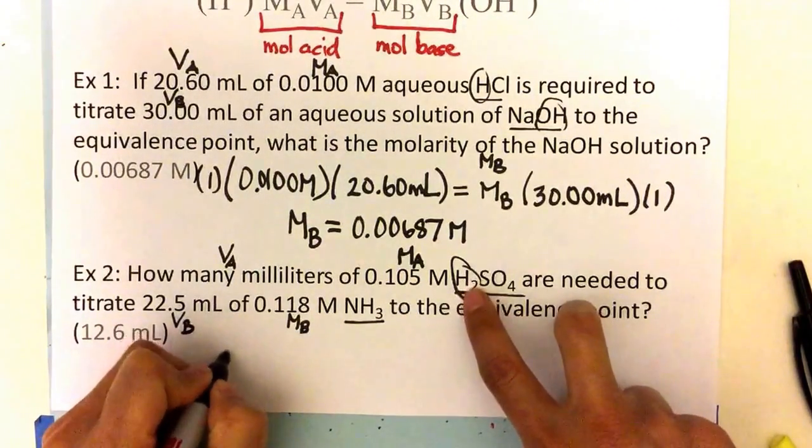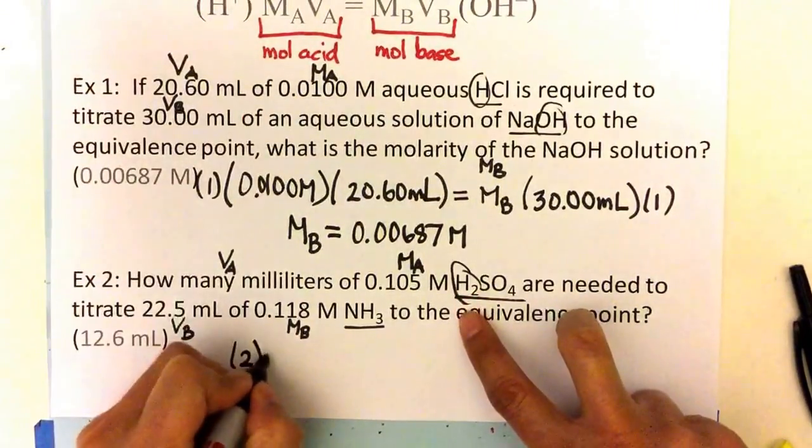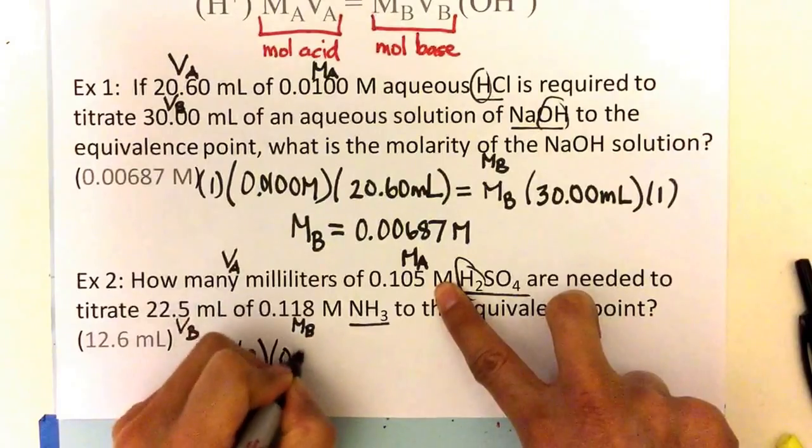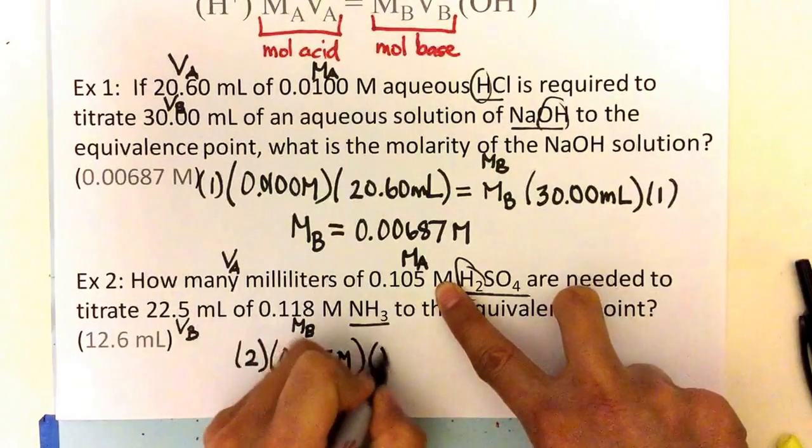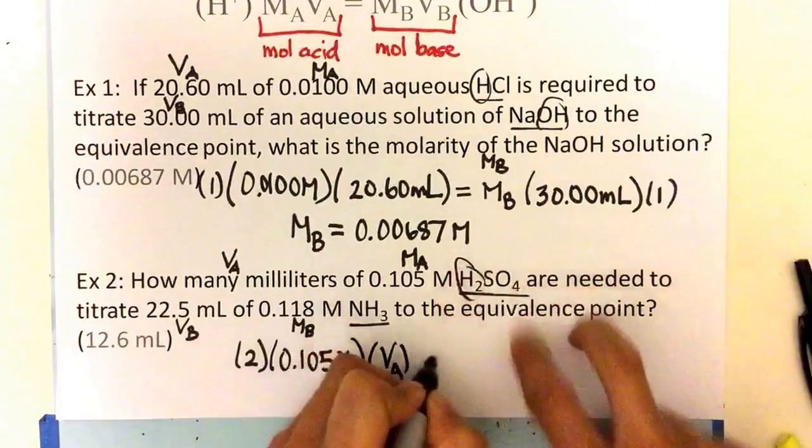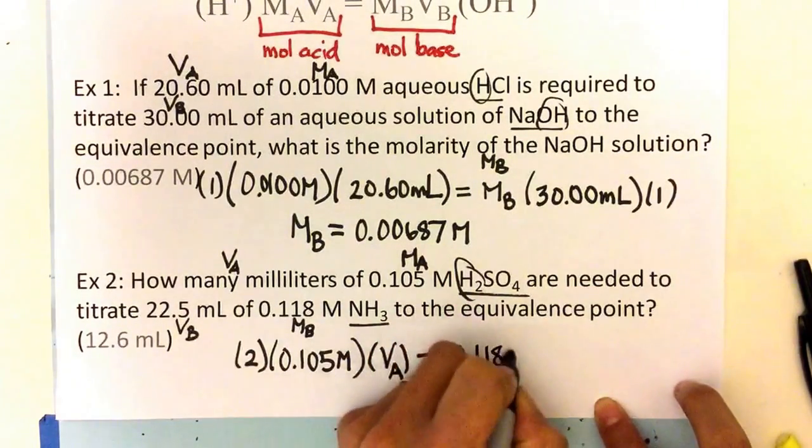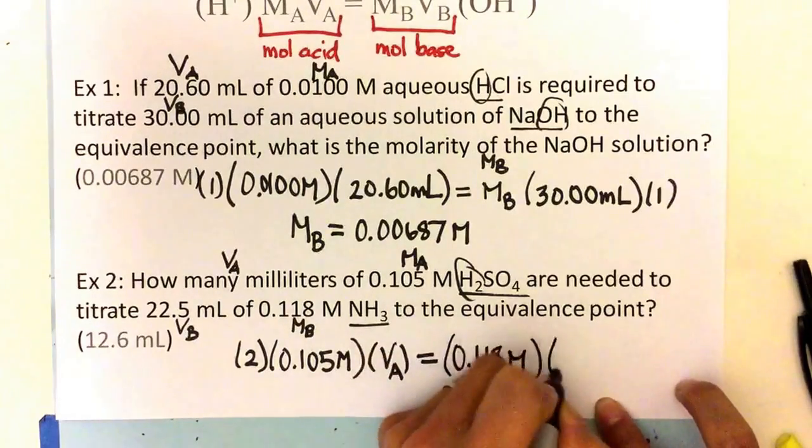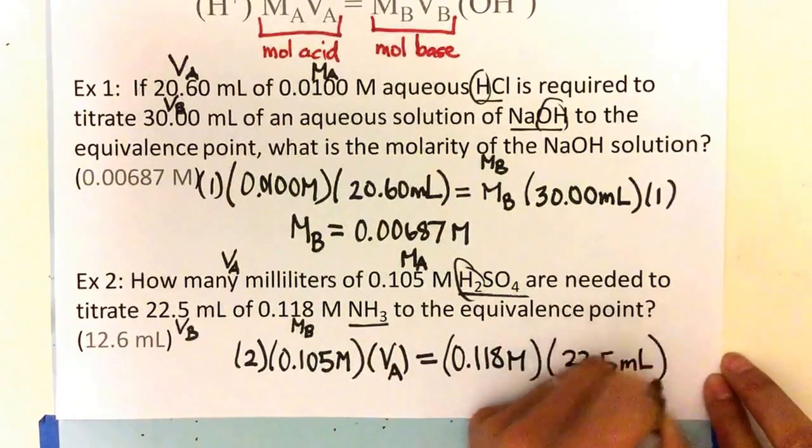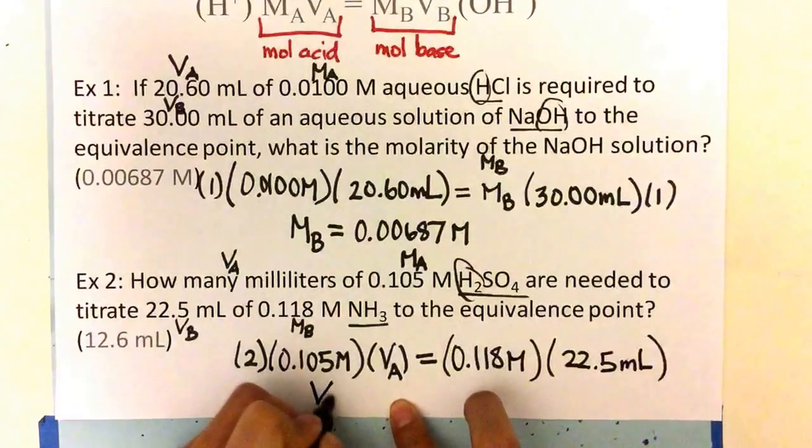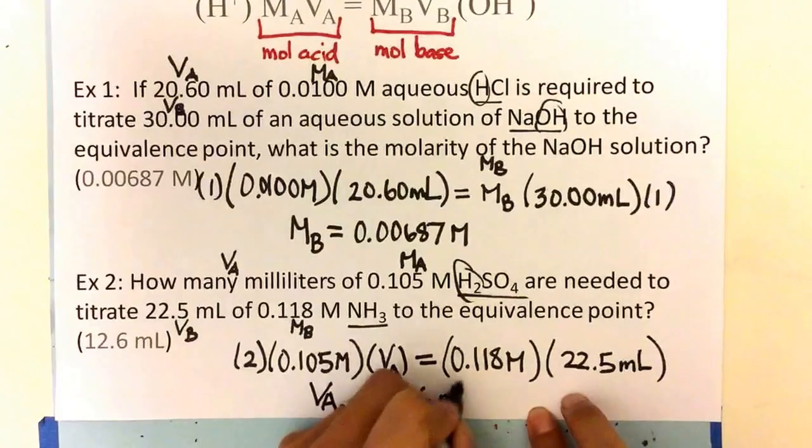Because it's diprotic, I'm going to multiply the side for the hydrogen ions by two. And then MA is 0.105 molarity, and VA is unknown. MB is 0.118 molarity. VB is 22.5 milliliters. Solving for VA, my answer is, in the end, 12.6 milliliters.